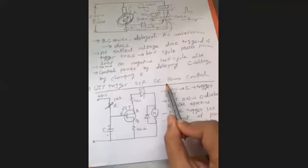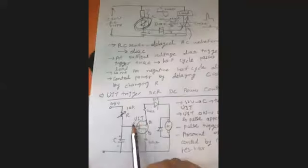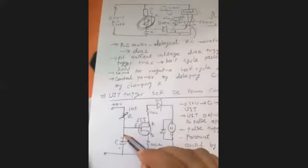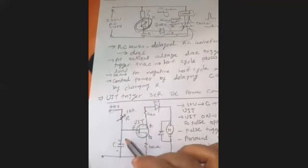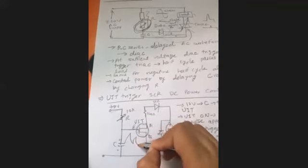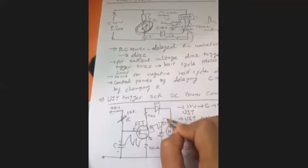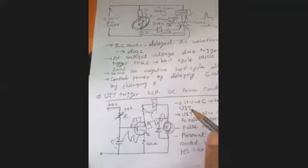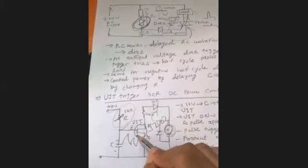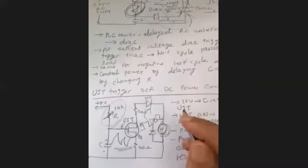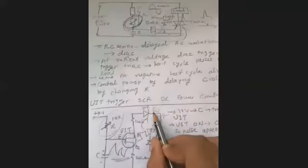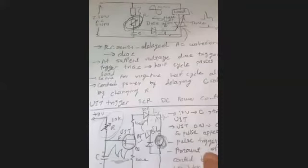Next is UJT-triggered SCR power control. A resistor-capacitor network charges and discharges the capacitor. When the capacitor voltage reaches the UJT threshold, the UJT fires a pulse that triggers the SCR. By changing the resistor value, the charging and discharging time changes, which changes the UJT pulse timing and therefore the SCR firing angle, controlling the load power.